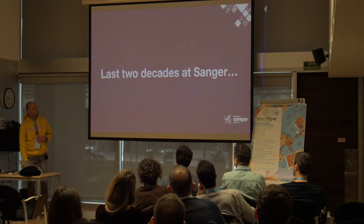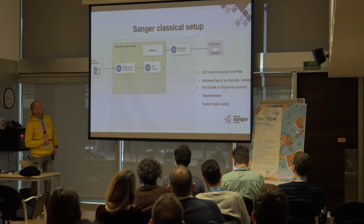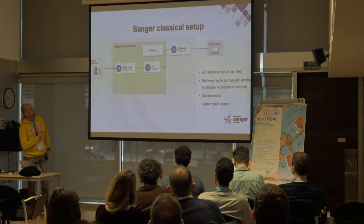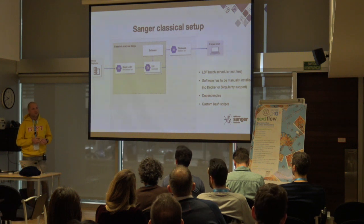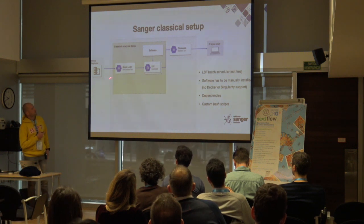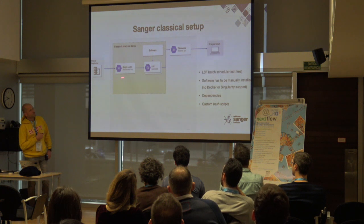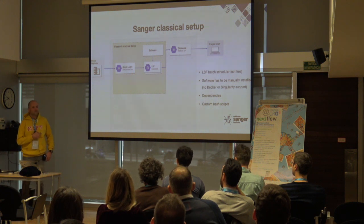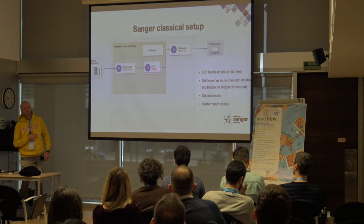So far at the Sanger, we had an LSF system provided by IBM. After the sequencing machine, data goes to the iRODS database, which is one of the cheapest options for storing large amounts of data. When we want to analyze the data, we copy it from iRODS to another storage system called Secure Lustre. This storage system is very fast in terms of IO, so you can run your pipelines very quickly. Then you run your jobs using LSF — same as Slurm or SGE — starting jobs in parallel.